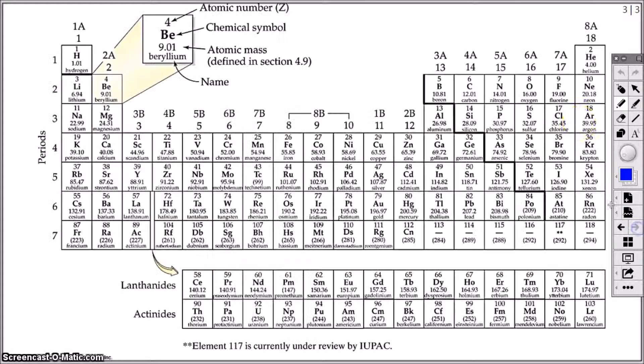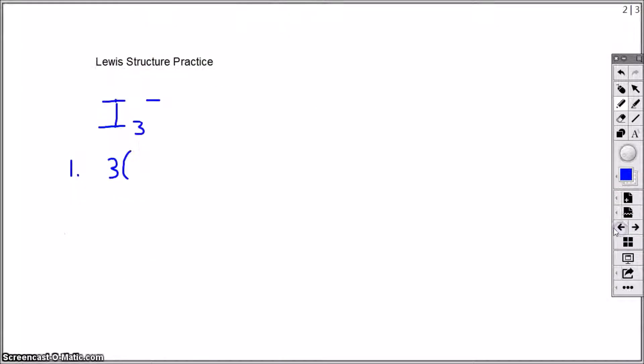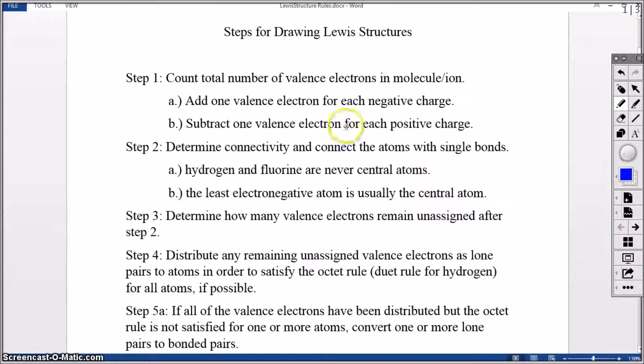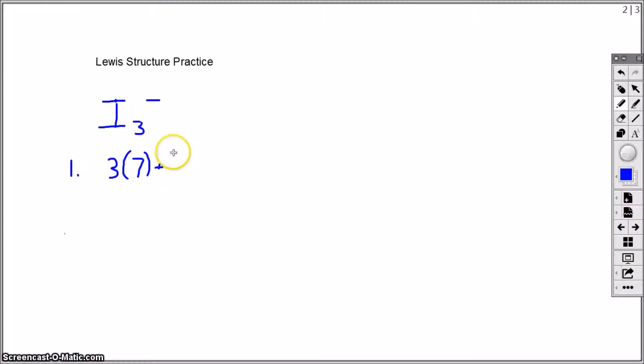Iodine, because it is in group 7A in the periodic table, that tells us that iodine has seven valence electrons. Group number tells us how many valence electrons the atom has. But then this negative one charge indicates that we need to add one valence electron for each negative charge that's present. So to my total, I'm just going to add one to give me a total of 22 valence electrons.